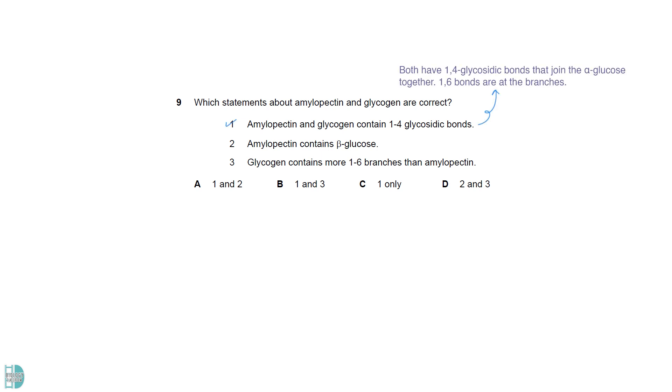Amylopectin and glycogen have 1-4 glycosidic bonds that join the alpha-glucose together. They have 1-6 bonds at where they branch. Both polysaccharides are made up entirely of alpha-glucose, so two is incorrect. Glycogen is more compact and more highly branched compared to amylopectin. It has more 1-6 bonds because of the greater number of branches.